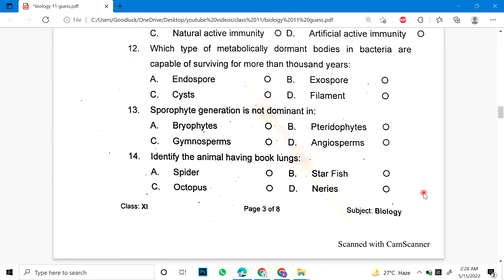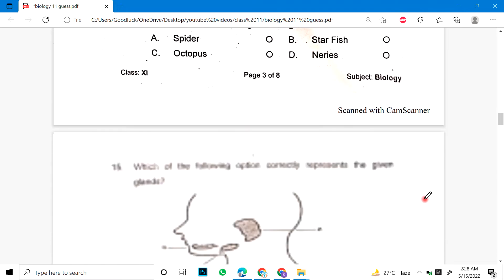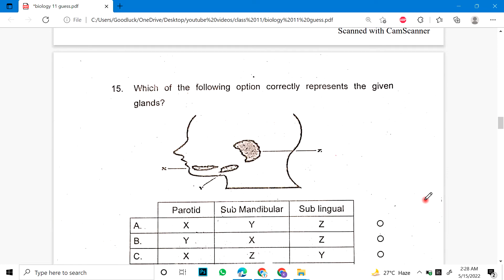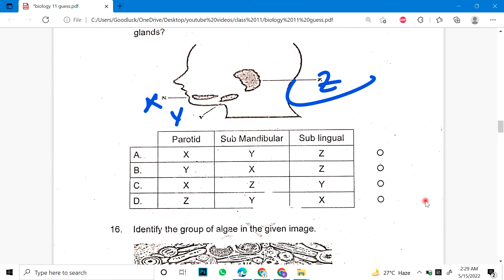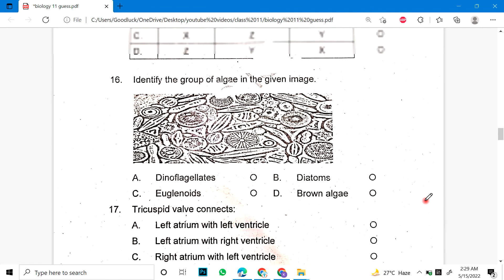Number 14: Identify the animal having book lungs. Number 15: Which of the following option correctly responds to the given glands? This gland is given as X, Y, Z. You can tell me how to correspond.